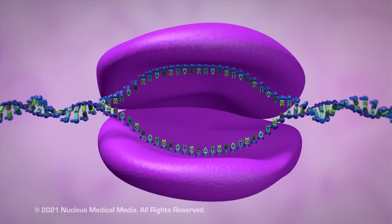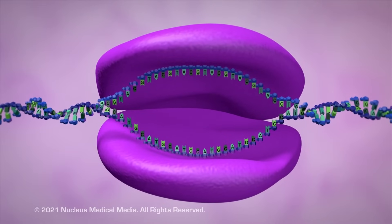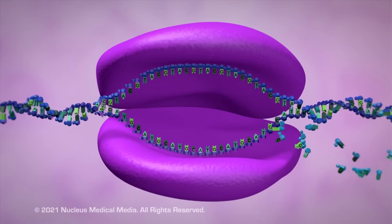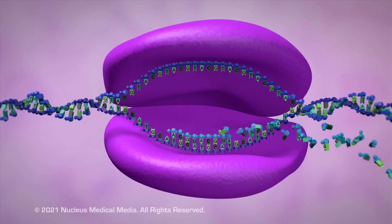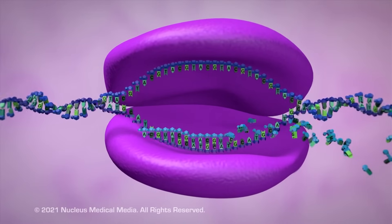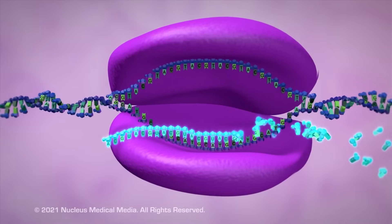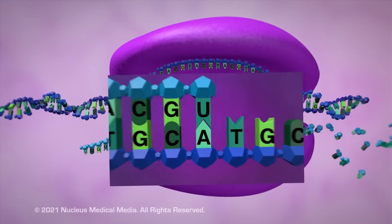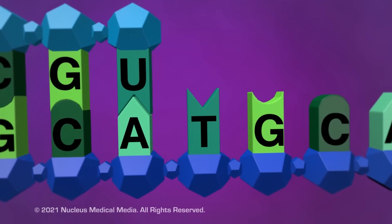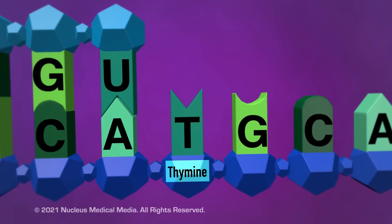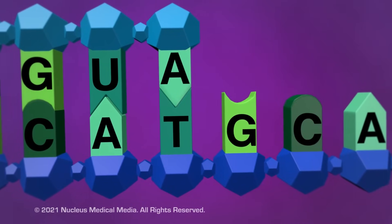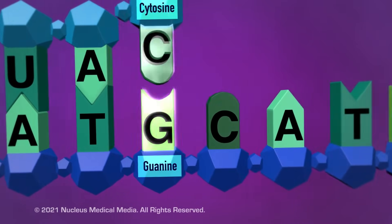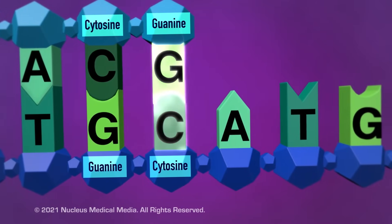So how are DNA instructions transcribed into messenger RNA? Well, using the template strand as a guide, RNA polymerase uses the base pair rule to assemble free nucleotides in the nucleus into a complementary strand of RNA. For example, RNA polymerase reads the DNA base thymine on the template strand, then binds it to a free nucleotide containing adenine.